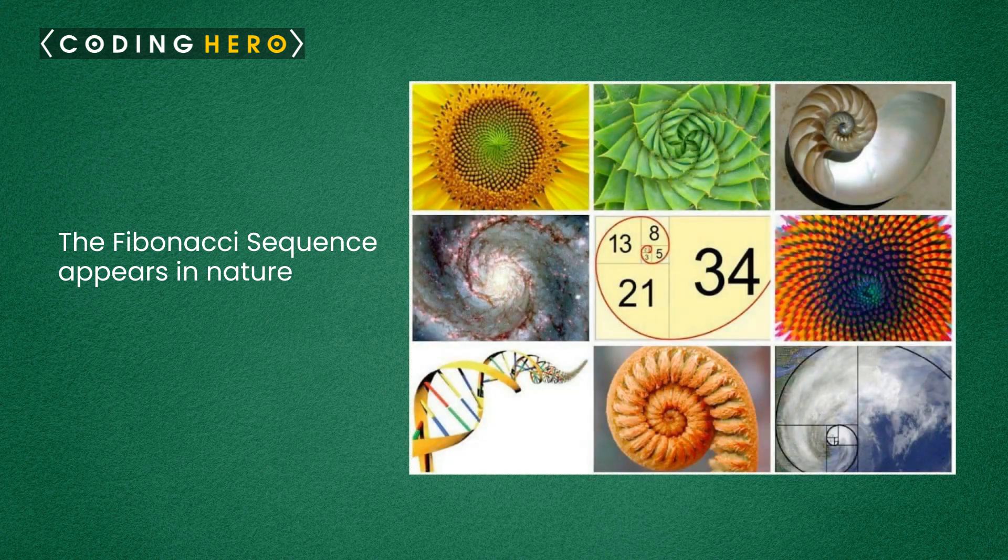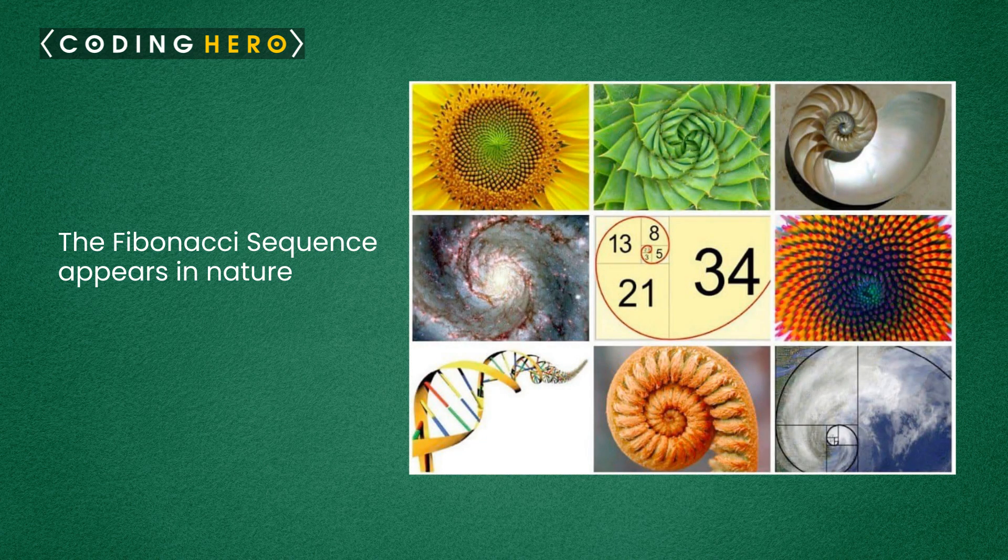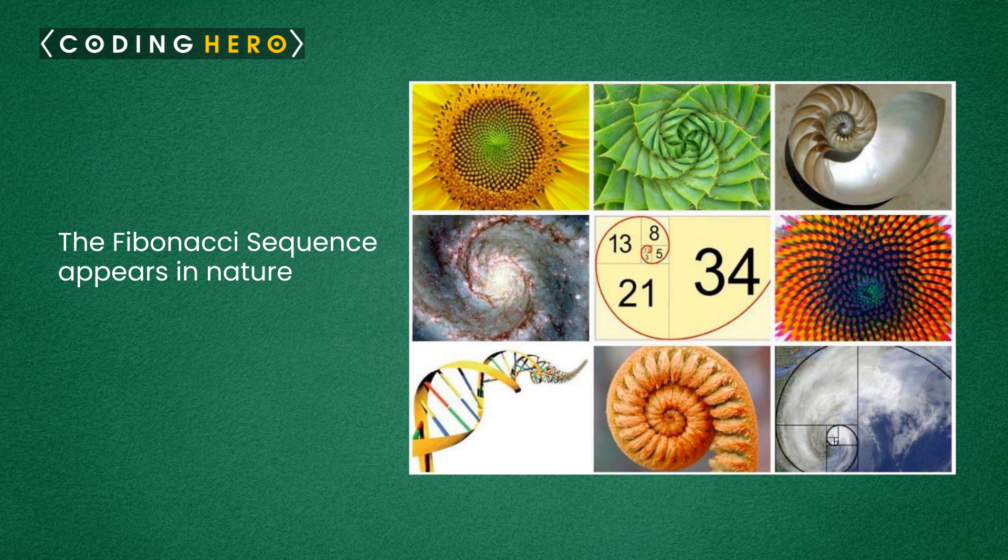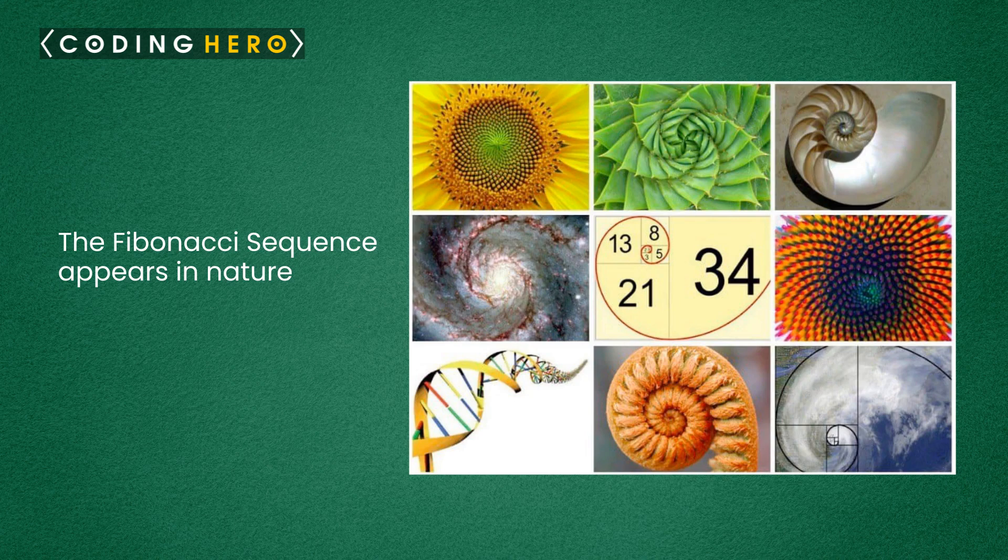The Fibonacci Sequence often appears in nature: petals in flowers, Fibonacci spirals found in sunflower seeds, daisy flowers, cauliflower, seashells, waves, organs of the human body, in music notes, in DNA, and many more.